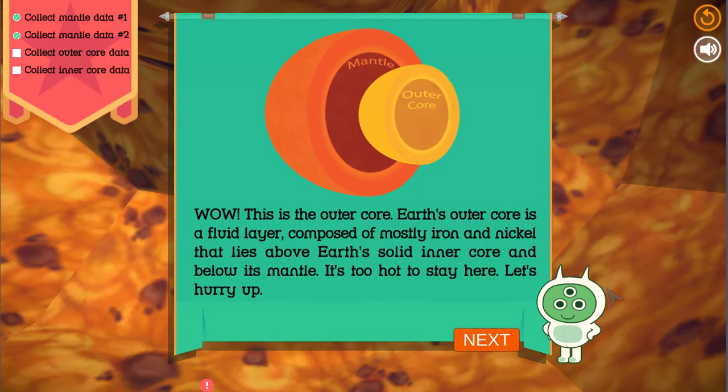Wow! This is the outer core. Earth's outer core is a fluid layer, composed of mostly iron and nickel that lies above Earth's solid inner core and below its mantle. It's too hot to stay here. Let's hurry up.